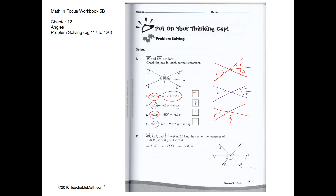Is R plus S the same as P plus Q? No, it's not true. Next, we have to find the sum of angles AOC, FOD, and BOE. BOE is the same as AOF because they are vertically opposite angles. Therefore the sum of AOC, FOD, and BOE will be 180 degrees.